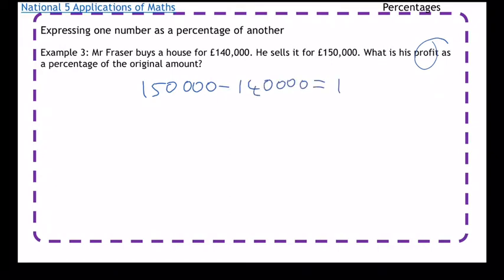So that's his profit, the £10,000. What you also need to be careful about is it's of the original amount. The original amount is the £140,000, so make sure you're using that number.